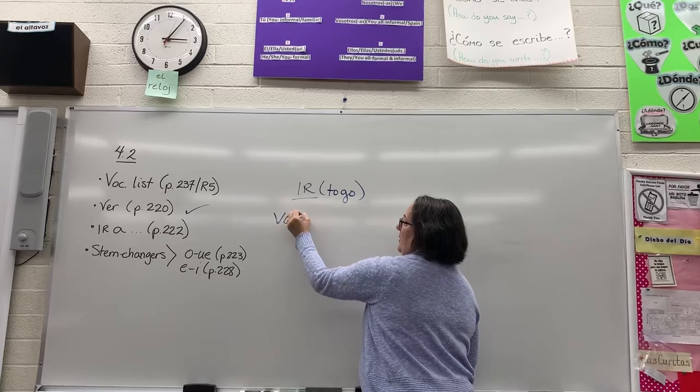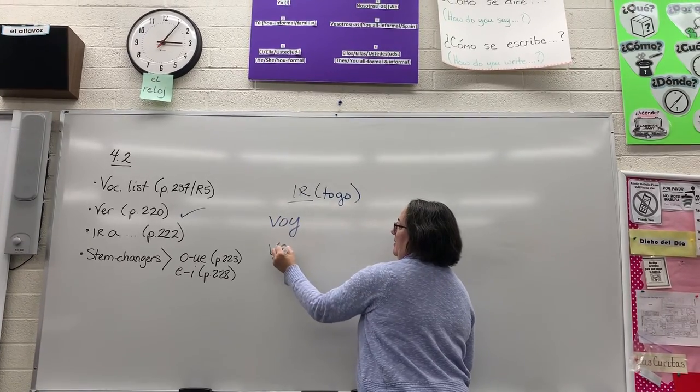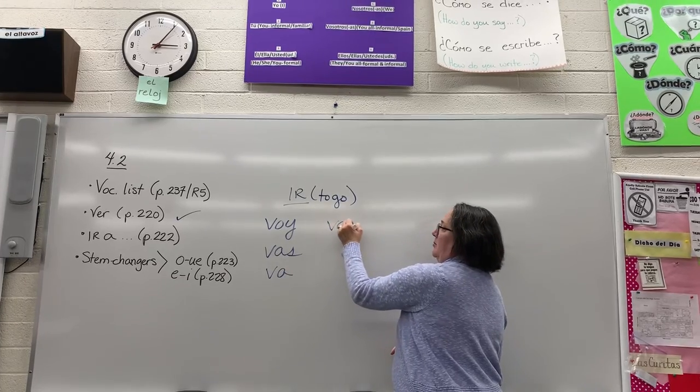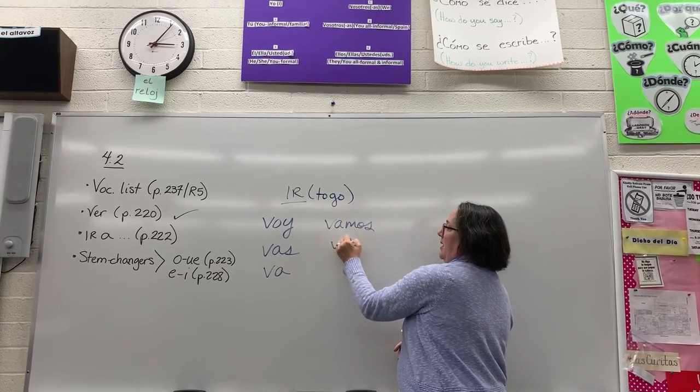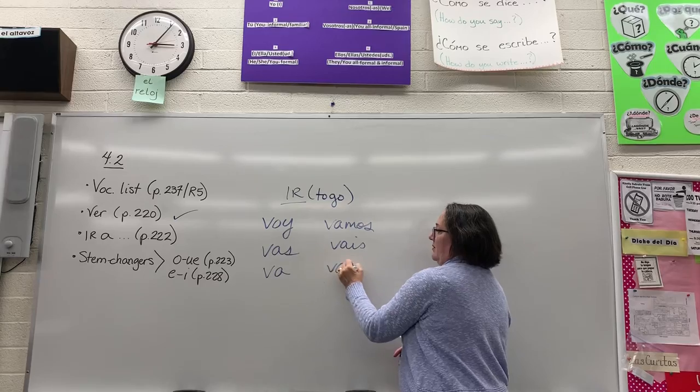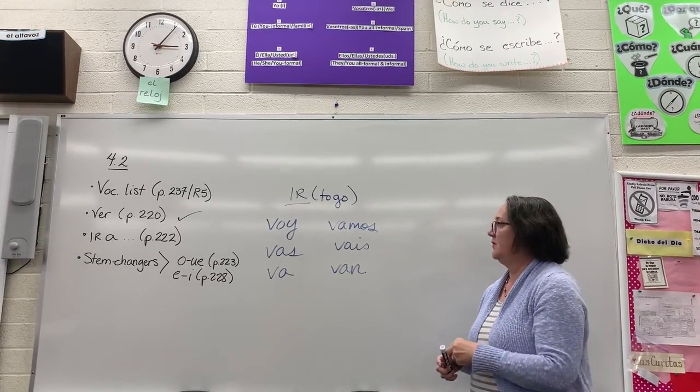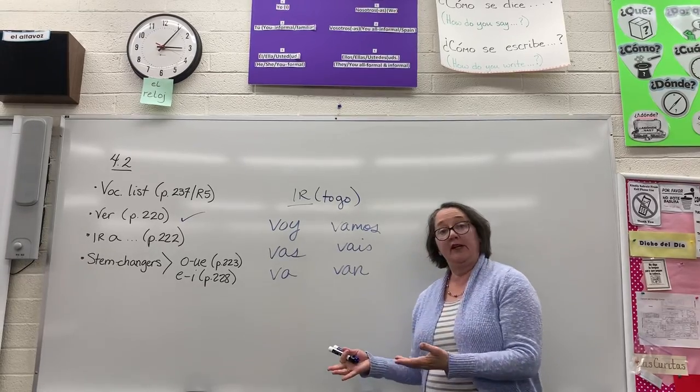So ir, very wonderful useful verb, lets you talk about things that are going to happen in the near future, so you can talk about places that you're going to go or activities that you're going to do.